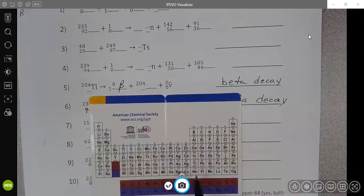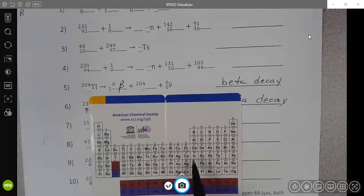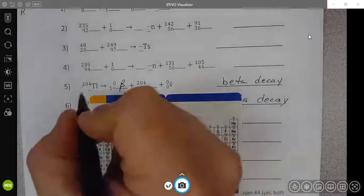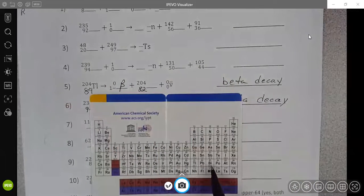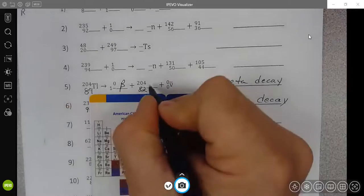So this reaction is thallium, which is TL, not TI. And I would have a dot on it. And the atomic number is 81. And that atomic number goes up to 82, which is then lead PB.